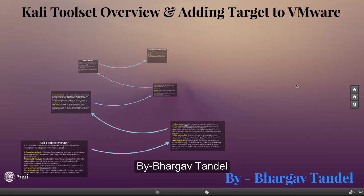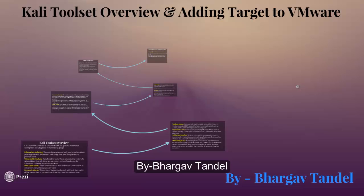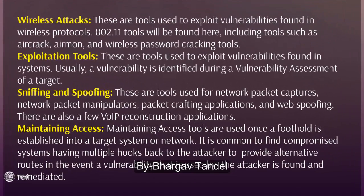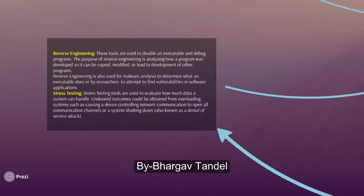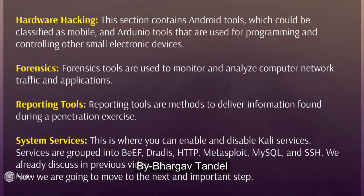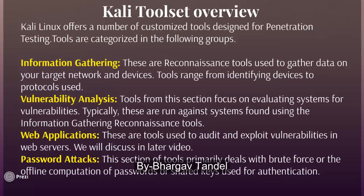Hello friends, today we are going to start Ethical Hacking Course Part 3: Kali Linux Toolset Overview and adding a new target to our VMware Workstation. In this video we are going to discuss the Kali toolset overview. It is categorized in the following groups: information gathering, vulnerability assessment, web application testing, password attacks, wireless attack, exploitation, sniffing and spoofing, maintaining access, reverse engineering, stress testing, hardware hacking, forensics, reporting tools, and system services.